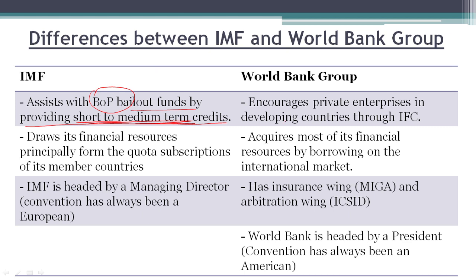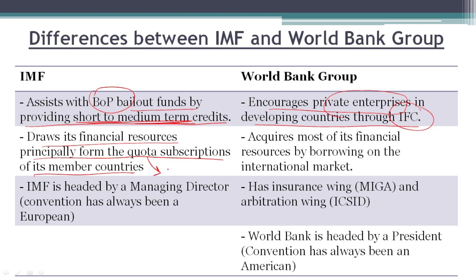The World Bank Group also encourages private enterprises in developing countries through its institution called IFC, the International Finance Corporation. IMF draws its financial resources principally from quota subscriptions from its members, though it also draws a small amount from G10 countries in the form of GAB, and from other countries in the form of NAB.